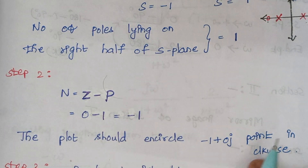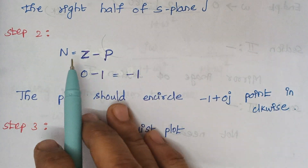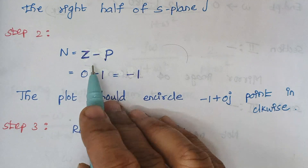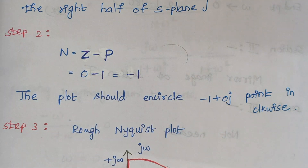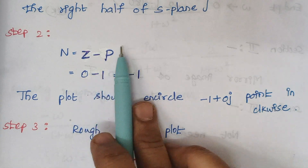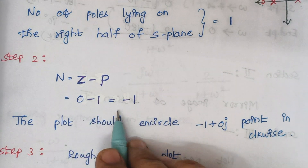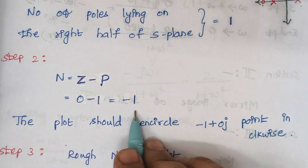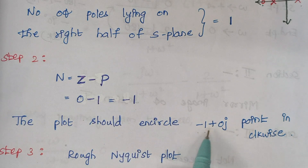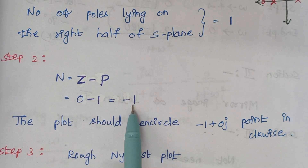Step 2 is calculating the number of encirclements, given by the formula N equals Z minus P. Zeros lying on the right half of the s-plane is 0 and number of poles lying on the right half is 1. So 0 minus 1 equals minus 1. This means that the point minus 1 plus 0j should be encircled only once in the clockwise direction — the minus sign indicates clockwise direction.